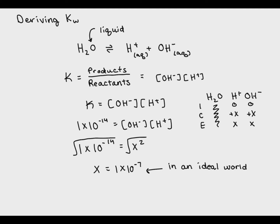Now this is in an ideal world, which means our pH would be 7, and both concentrations would be the same.